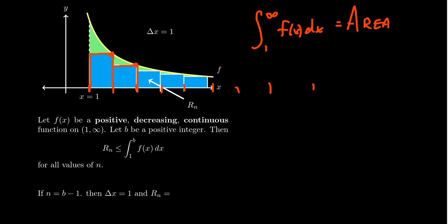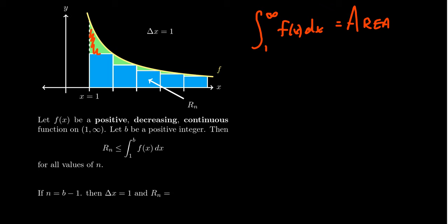Because the function is positive and decreasing — and this is really critical — positive means it will be above the x-axis, and decreasing means it gets smaller as you go from left to right. So in particular, the right-hand point is going to be the smallest value in any interval. As such, the right-hand rule is going to underestimate the area under the curve. Notice the gaps — there are pieces missing. Therefore, the right-hand rule will be less than or equal to the integral from 1 to b.